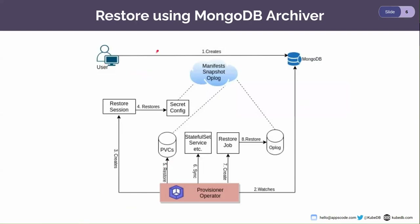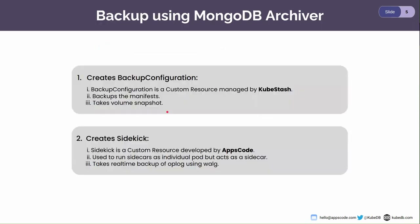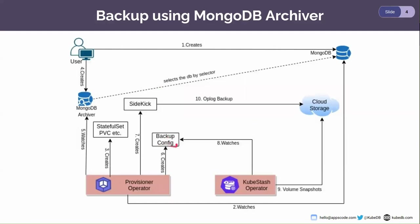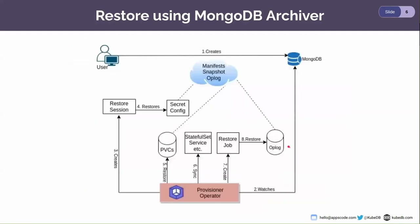Now let's see the MongoDB restore workflow. To restore the database, the user creates a MongoDB object and provides the information specifying at which point in time they want to recover the database. The provisioner operator watches this MongoDB database, sees that it wants to restore from a previous backup, and creates a restore session to restore the manifest — such as authentication secret, configuration secret, etc.